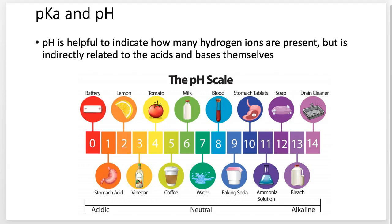pH is helpful to indicate how many hydrogen ions are present, but it is indirectly related to the acids and bases themselves. That's why we talk about pKa. pH is about the environment; pKa is about the specific acids and bases themselves.